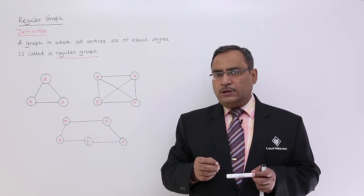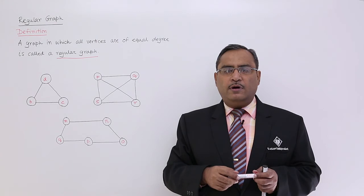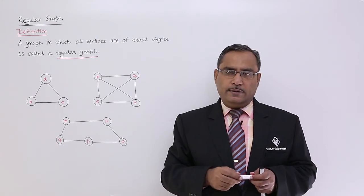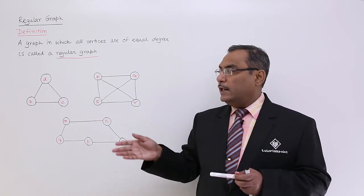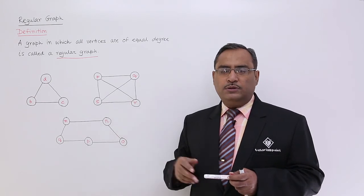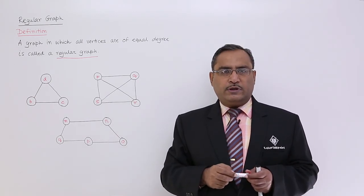Regular graph means where all the nodes constructing that graph will have the same degree. I think you are getting this idea and the conception is clear going through these examples. Thanks for watching this video.